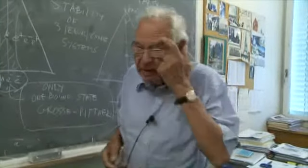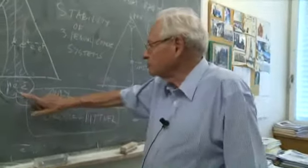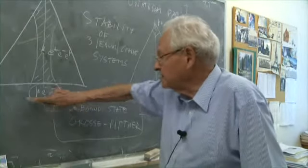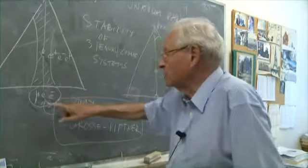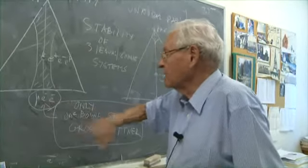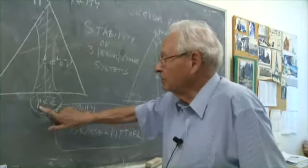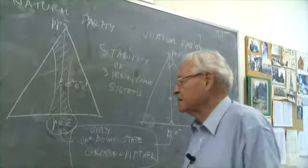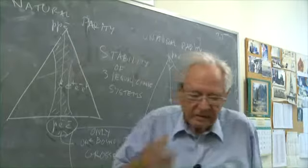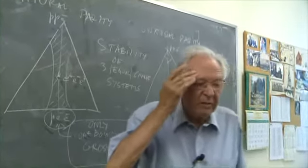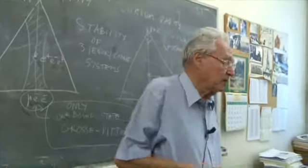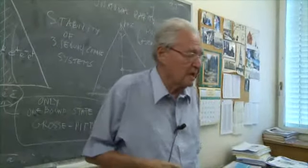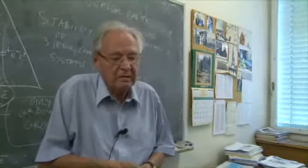For instance, we can manufacture the anti-H-minus — that is to say the system opposite to proton-electron-electron — which is anti-proton, positron, positron — and see how it behaves. Eventually we hope to make extremely accurate measurements on the spectrum of these systems and check the CPT theorem.